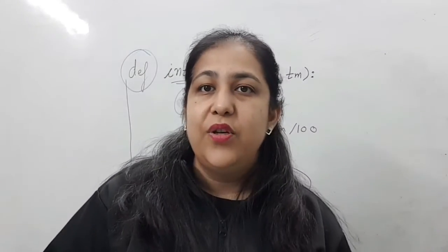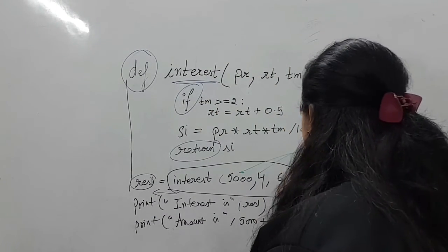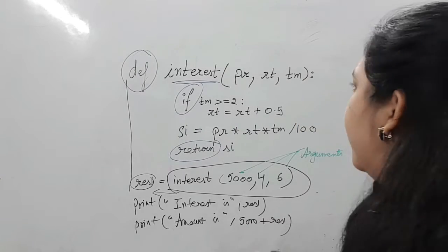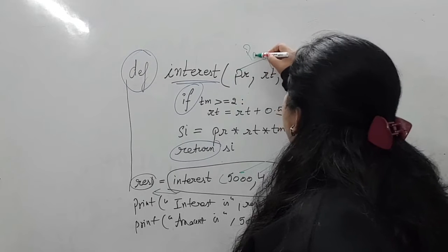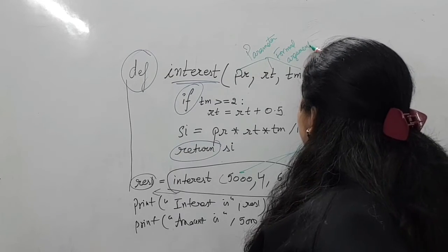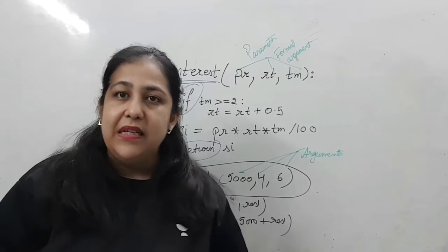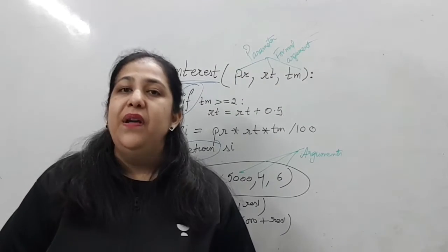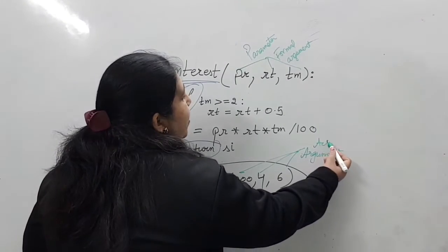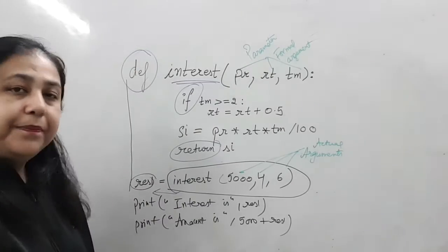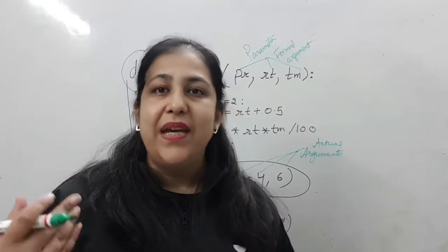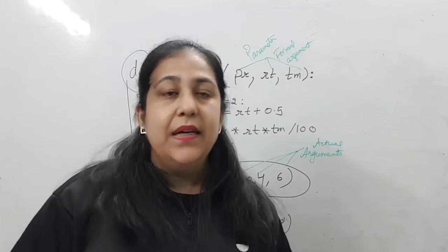Now here are some definitions you need to understand. The values that we pass when calling a function — like 5000, 4, 6 — are called arguments, or actual arguments. The variables that receive those values in the function definition — like `pr`, `rate`, `time` — are called parameters or formal arguments. In an exam, you may get a 1 or 2 mark question: what is the difference between actual argument and formal argument? Passed values are actual arguments; received values are formal arguments.